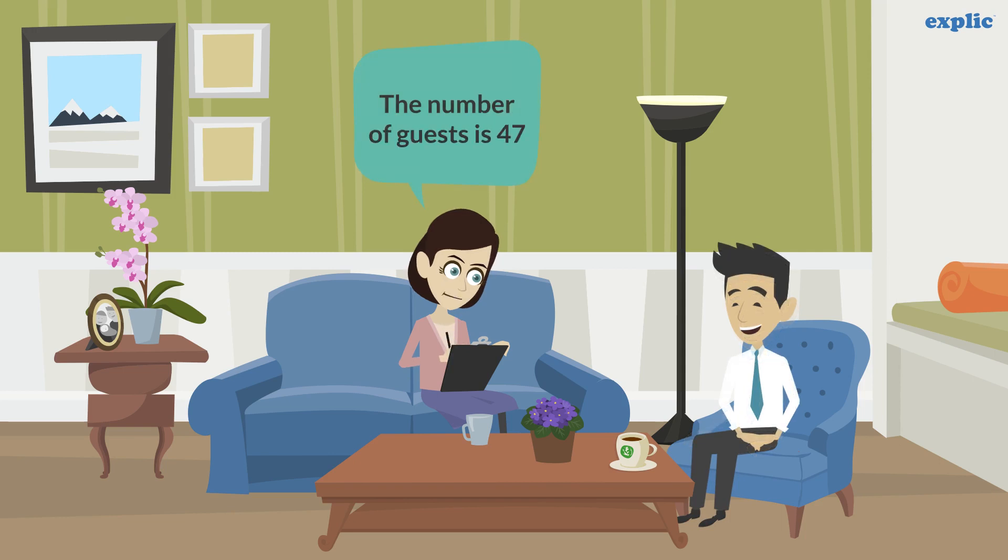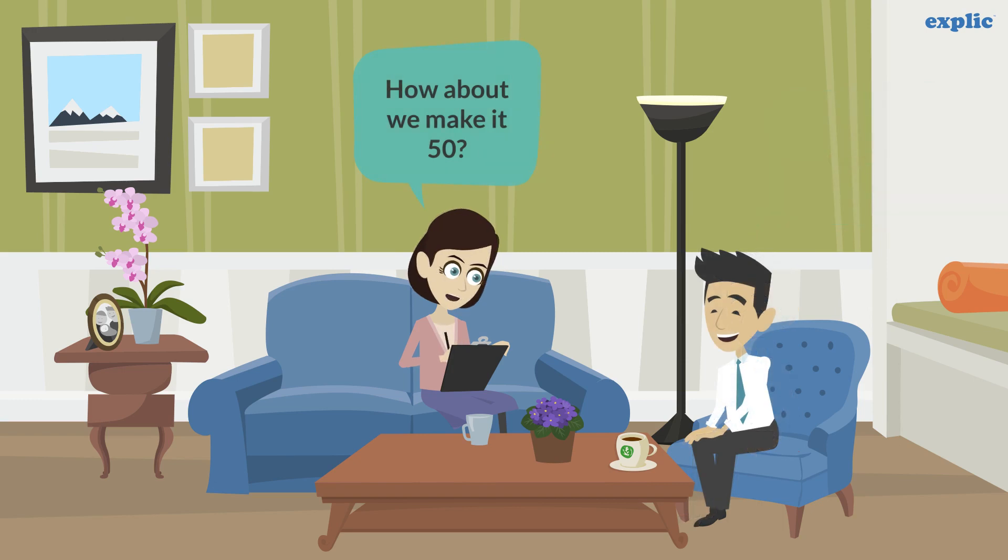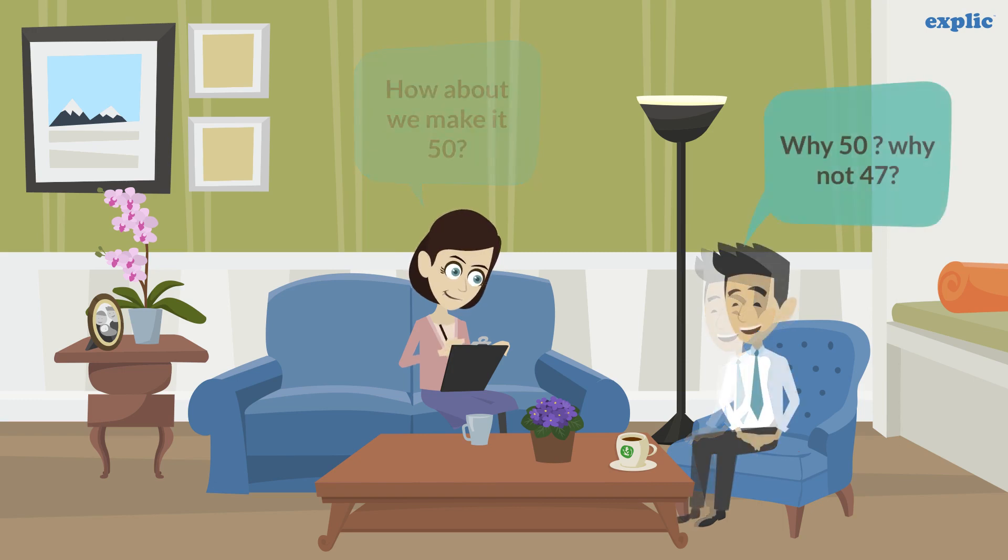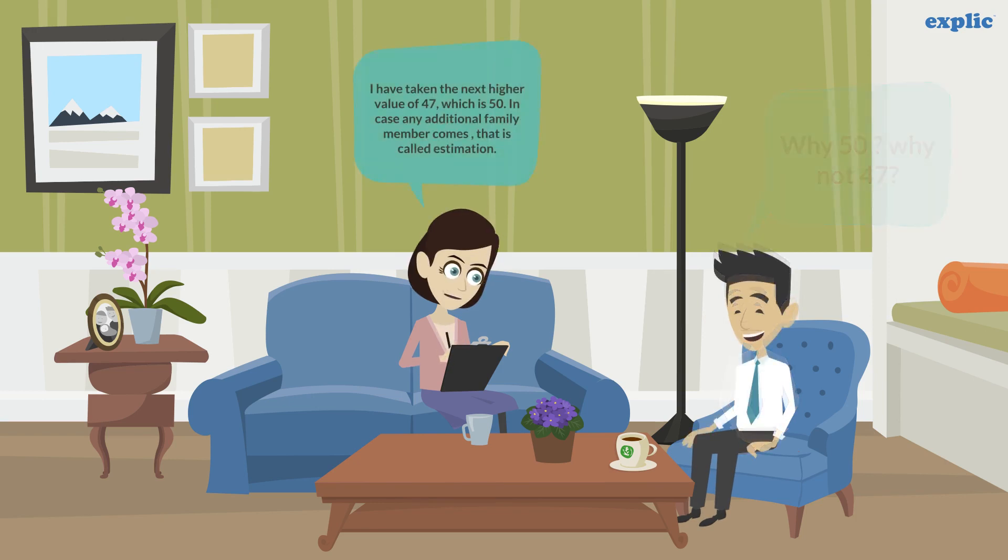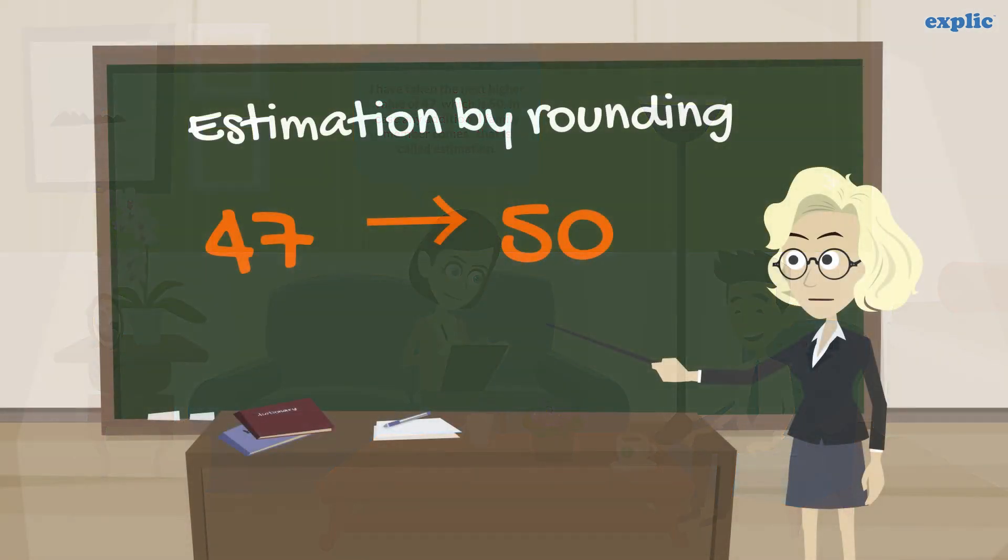The number of guests is 47. Good, how about we make it 50? Why 50? Why not 47? I have taken the next higher value of 47, which is 50, in case any additional family member comes. That is called estimation. As you saw, Alia has estimated the number of guests as 50. She has rounded off 47 to the nearest 10. Let's learn the methods to round off a number.